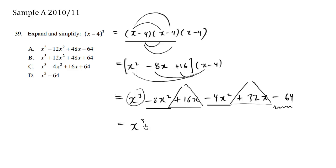So we have x cubed. Going to look at all the squares. We have a negative 8, negative 4 is negative 12x squared. Positive 16x, positive 32x is going to be 48. Positive 48x.